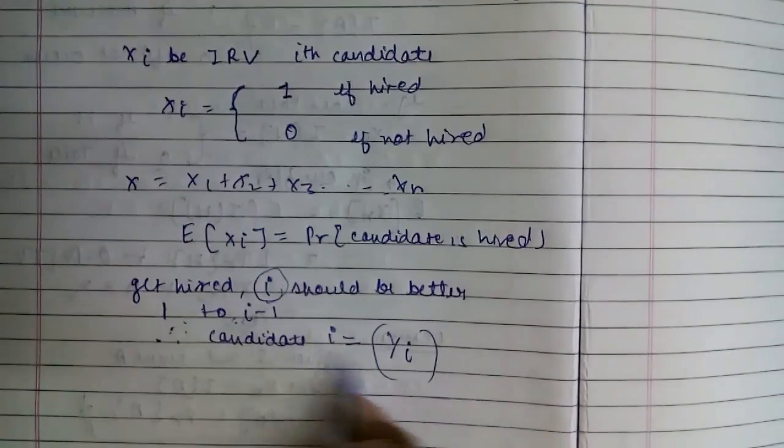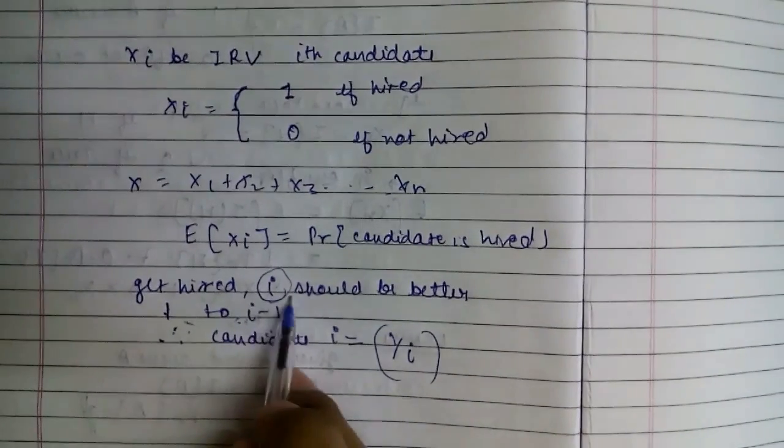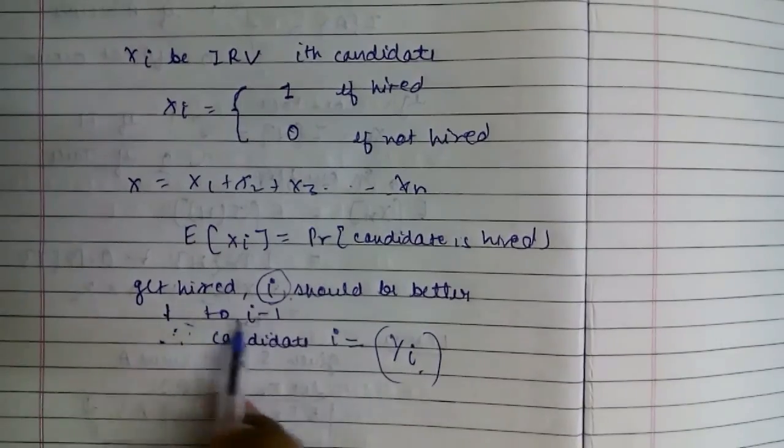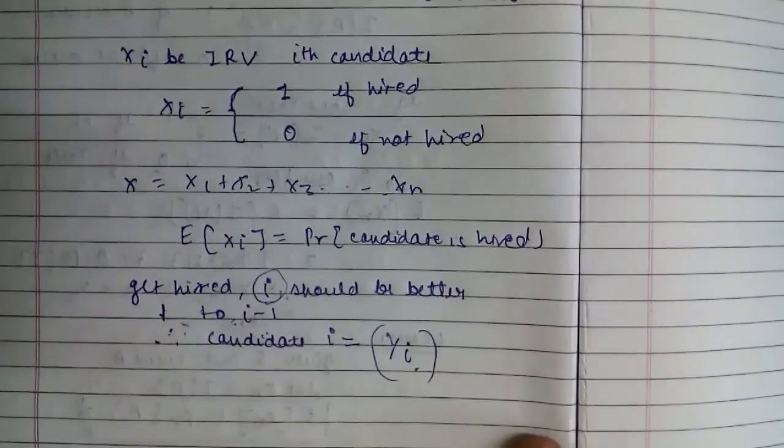This is the probability. As there are i candidates, its probability is 1 by i, as the order is random and the quality is equally likely.